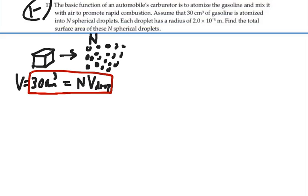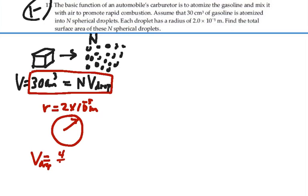Now we know that the droplets are spherical, and we know that it has a radius R, and the radius is equal to 2 times 10 to the minus 5 meters. And we know for a sphere that the volume should be equal to, in this case, the volume of the droplet should be equal to 4 thirds pi R cubed.